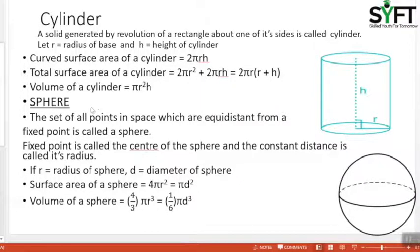Sphere. The set of all points in space which are equidistant from a fixed point is called a sphere. The fixed point is called the center of the sphere. This is the fixed point, and this is a surface point on the surface.